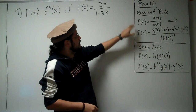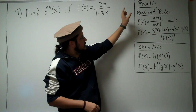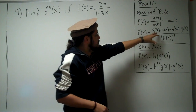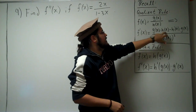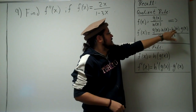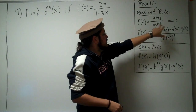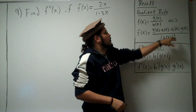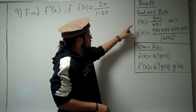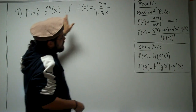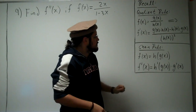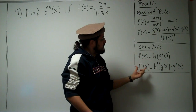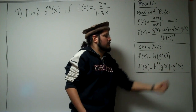The quotient rule says that the derivative of a function divided by another function equals the derivative of the numerator times the function of the denominator, minus the derivative of the denominator times the function of the numerator, all divided by the denominator squared. And when we find the second derivative, we're going to have to use the chain rule: the derivative of a composition of functions is the outer function times the derivative of the inner function.